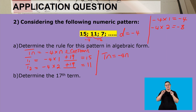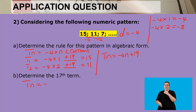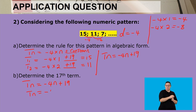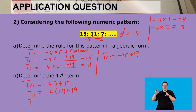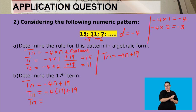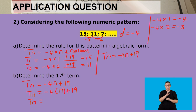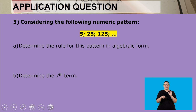Our rule is tn = -4n + 19. Now let's find the 17th term using this rule: negative 4 multiplied by 17, plus 19. Negative 4 times 17 is negative 68, and adding 19 gives us negative 49. So the 17th term is negative 49.